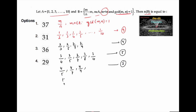Starting with 5: 5 upon 6, 5 upon 7, 5 upon 8, 5 upon 9 are all valid, but 5 upon 10 we cannot take. So 4 elements.